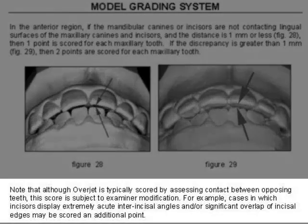Note that although overjet is typically scored by assessing contact between opposing teeth, this score is subject to examiner modification. For example, cases in which incisors display extremely acute interincisal angles and/or significant overlap of incisal edges may be scored an additional point.